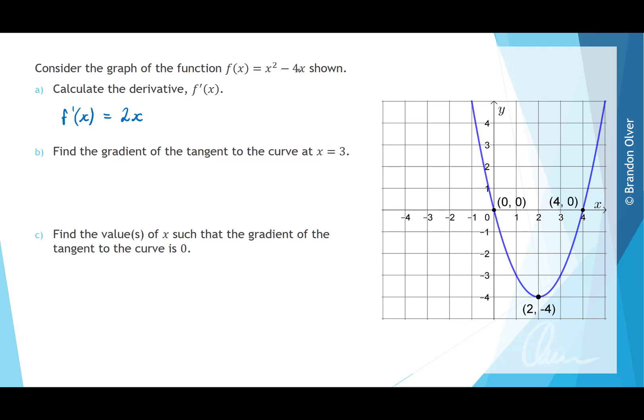And then here technically the -4x has a power of 1, so multiplying by 1 just gives -4, and then taking 1 off the power gives x to the power of 0, and anything to the power of 0 is 1. So that means that the derivative f'(x) is equal to 2x - 4.